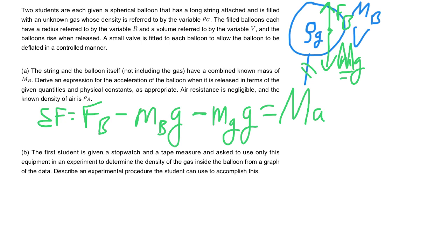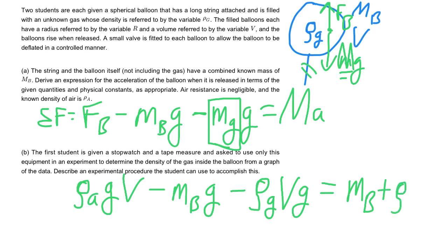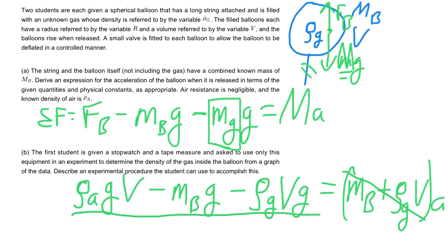The buoyancy force is ρ_air times g times the volume of the balloon, minus the mass of the balloon times g, minus the density of the gas times the volume of the balloon times g, and that equals MA. Combining the masses: (m_balloon + ρ_gas × V_gas) × g on the right side times A. To solve for A, we divide through by (m_B + ρ_gas × V), giving us our acceleration.